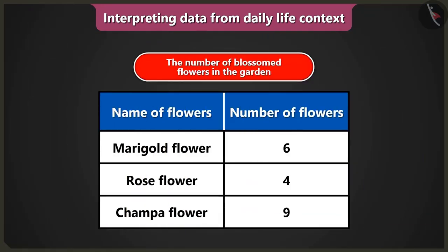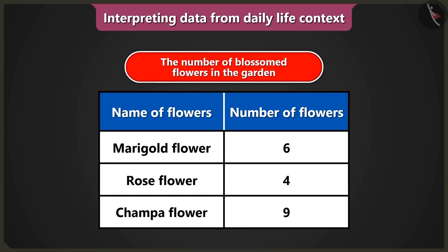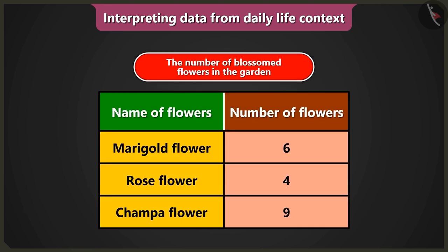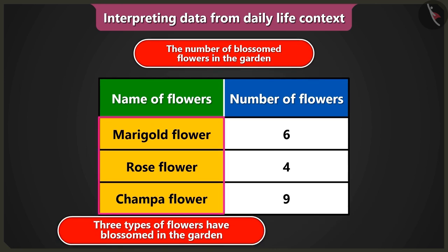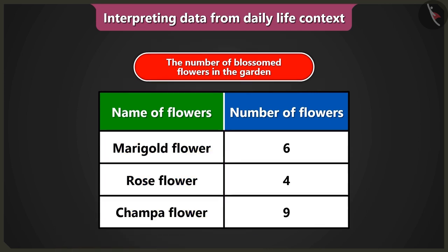Look, there are different flowers in this garden. How many flowers have blossomed? That data has been collected and filled in the table. That's why it has been written on the top of the table: the number of blossomed flowers in the garden. There are two columns in the table. In the first column, the blossomed flowers in the garden are written. The names of the flowers are miracle flower, rose flower, and chumpa flower. From this data, we can know that three types of flowers have blossomed in the garden.